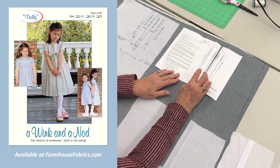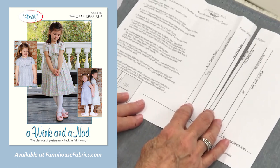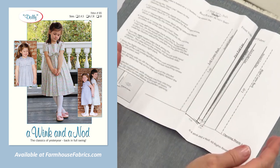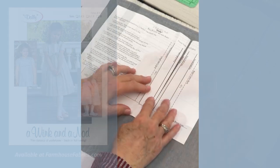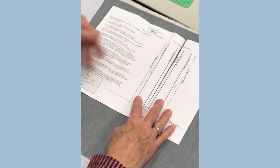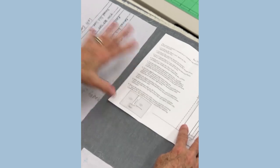I'm going to show you how to put the placket in that is recommended with the Dolly pattern by Wink and a Nod. It's really easy. The diagram included in the pattern is really good, the directions are very clear, and if you just follow them, I'm going to go step by step.